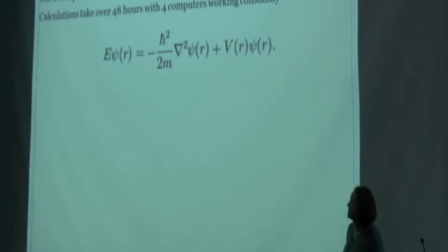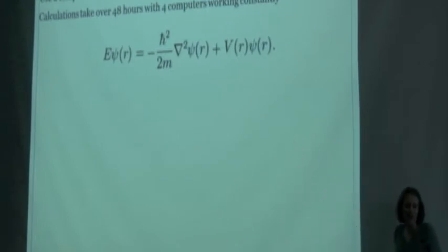This software that we use to solve these chemical properties solves this equation, which is a very complex equation. When I calculate these nitrogen binding energies, one calculation can take four computers working constantly over 48 hours. Only recently have we been able to start using computers like this to calculate properties of atoms or elements.